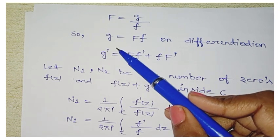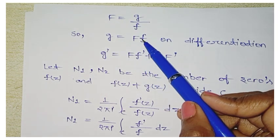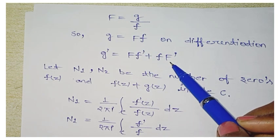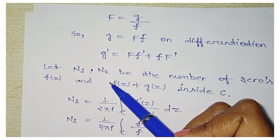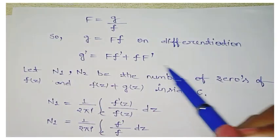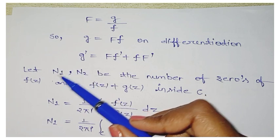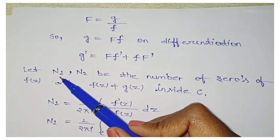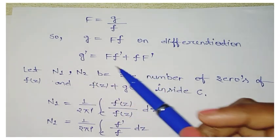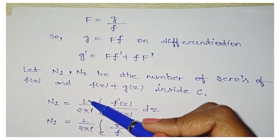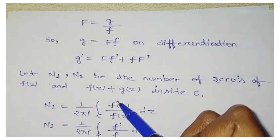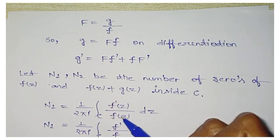Since g = F·f has two functions, we differentiate using the product rule: g' = F · f' + f · F'. Keep this aside. Now let n1 and n2 be the number of zeros of f(z) and f(z) + g(z) respectively inside C. So n1 represents zeros of f(z) and n2 represents zeros of f(z) + g(z) inside C.